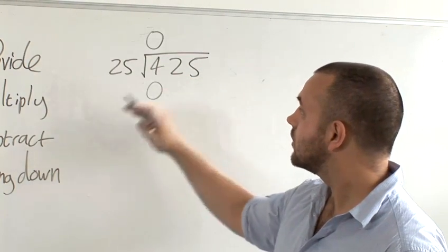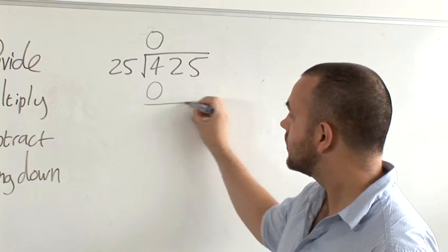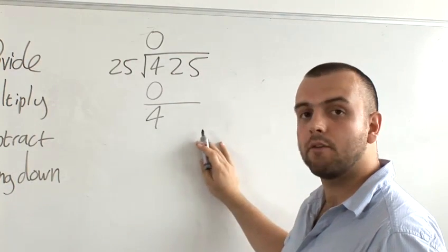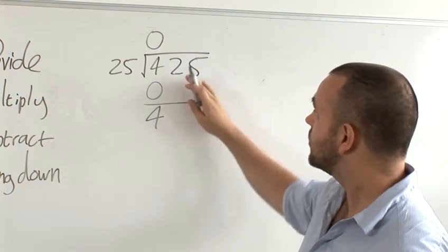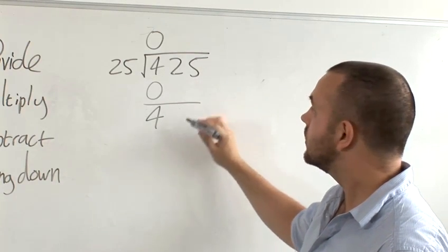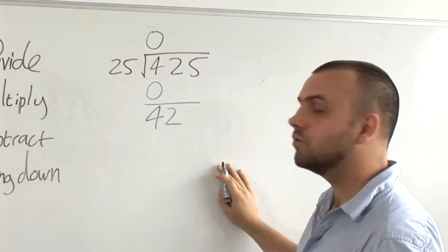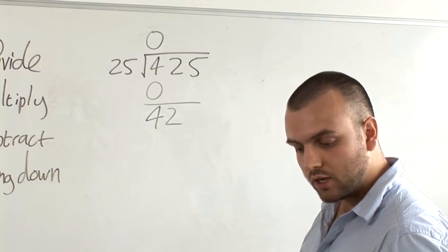Next, subtract. What is 4 minus 0? It's 4. And finally, you bring down. Bring down means you bring down the next number along in the number, giving us 42. And we repeat this process as we go through.